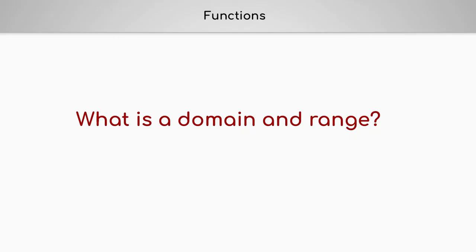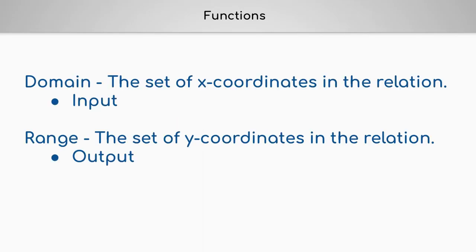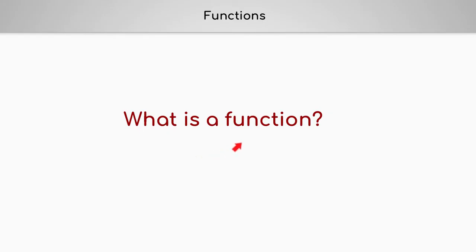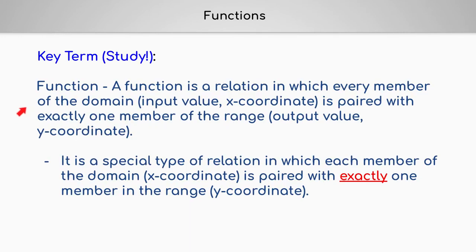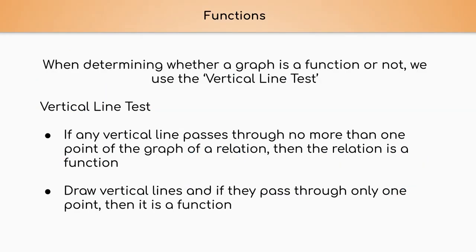Let's go through some key terms first. What is a domain and what is a range? Our domain is the set of X coordinates in the relation, also known as the input. Our range is the set of Y coordinates in the relation, also known as the output. A function is a relation in which every member of the domain — the input value, the X coordinate — is paired with exactly one member of the range, the output value or the Y coordinate.